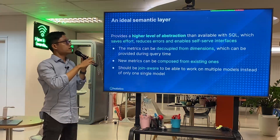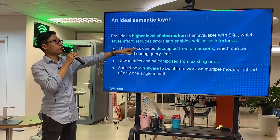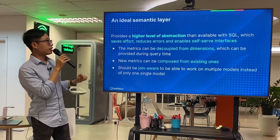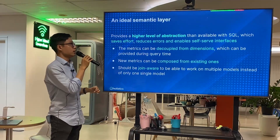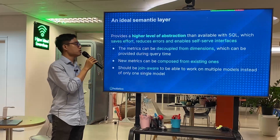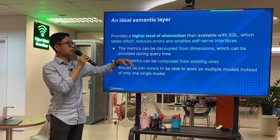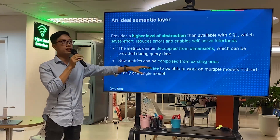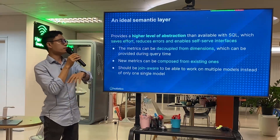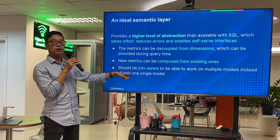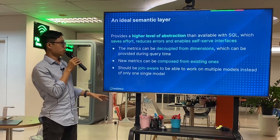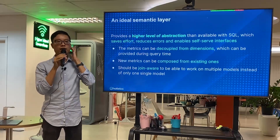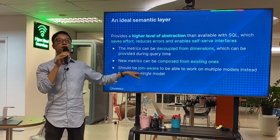An ideal semantic layer provides a high-level abstraction over SQL that saves effort, reduces errors, and enables self-service. The key insights are: metrics can be decoupled from dimensions so dimensions are provided at query time instead of hardcoded at development time; metrics can be composed from existing metrics; and it needs to be join-aware — working across multiple models. Currently dbt semantic layers only work on a single model, so that last piece isn't there yet.